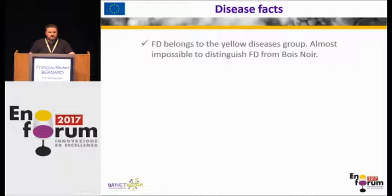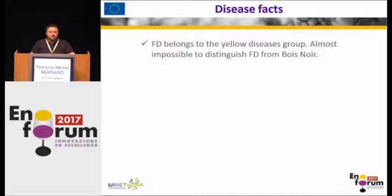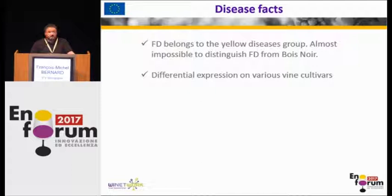Flavescence Dorée belongs to the so-called yellow diseases of the vine. Based on the symptoms per se, you can't distinguish between FD and Bois Noir. The only way you can tell is by making a laboratory analysis using PCR, which will identify the pathogenic agent. There are different expressions based on the cultivars and varieties. The rootstock, in Vitis americana, is symptomless, and that is of course significant.